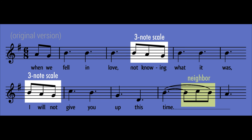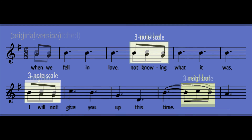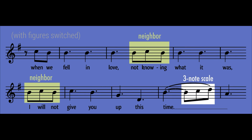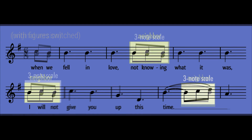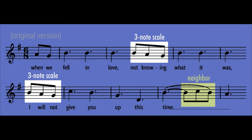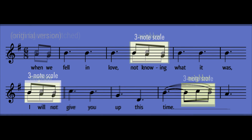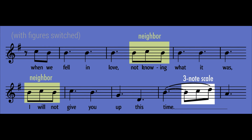Now listen to the difference when I change Sheeran's three-note scales to neighbor figures. The song becomes less song-like and a little bit more like speech. This is exactly what some songwriters want for certain songs, especially in a verse where it's more common to explain how the singer feels than to show how the singer feels. But Sheeran wants to be more emotional here, so the neighbor figures aren't the best choice. Listen carefully and judge for yourself — I'm only changing a few notes, but why do they make such a big difference?